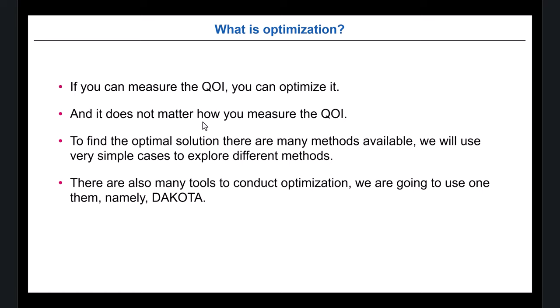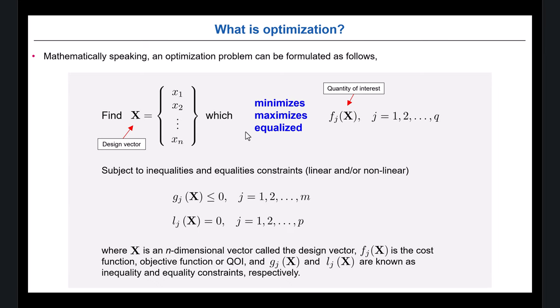To do the optimization, we're going to use one single tool — you probably know — we're going to use Dakota. But it's important to stress that you can use any tool; the optimization methods are exactly the same. What is going to change is just the user experience, how you interact with libraries. I really like Dakota for how it handles the coupling. You can use any tool, but have that in mind.